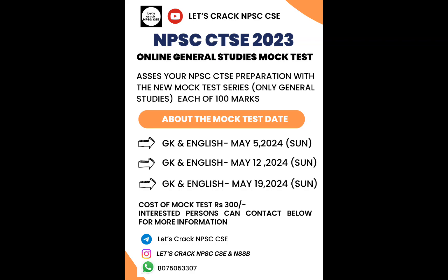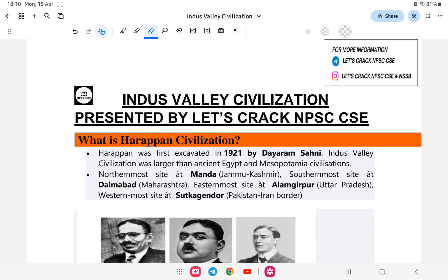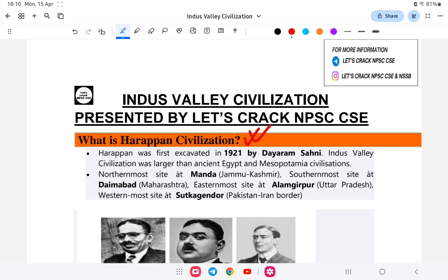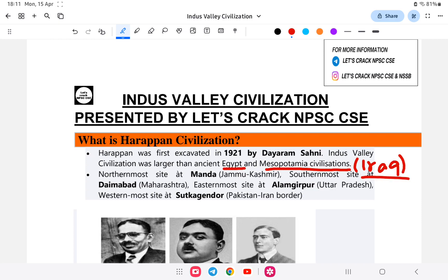The Indus Valley Civilization was first excavated in 1921. It was contemporary to two other great civilizations — Egypt and Mesopotamia. Mesopotamia refers to present-day Iraq, the Sumerian civilization. So the Indus Valley Civilization existed during the same time period as Egypt and Mesopotamia.